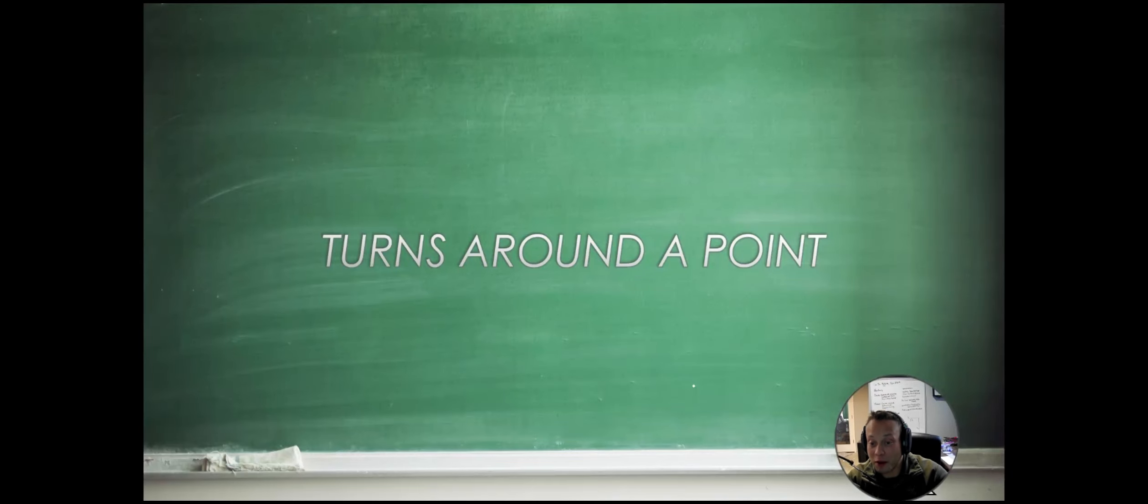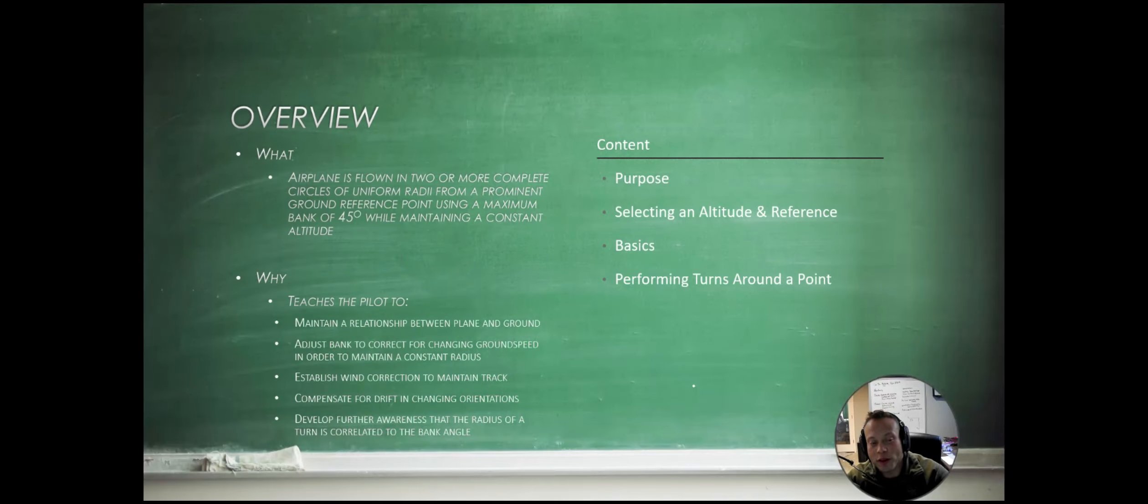Alright, now let's talk about turns around a point. A turn around a point is when the airplane is flown in two or more complete circles of uniform radii from a prominent ground reference point, using a maximum bank angle of 45 degrees while maintaining a constant altitude.